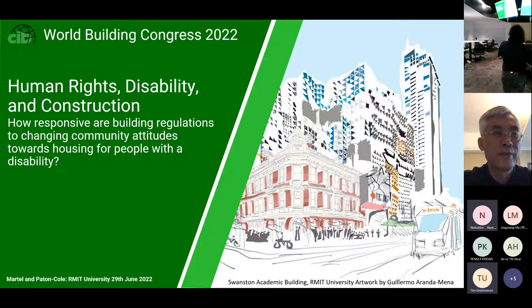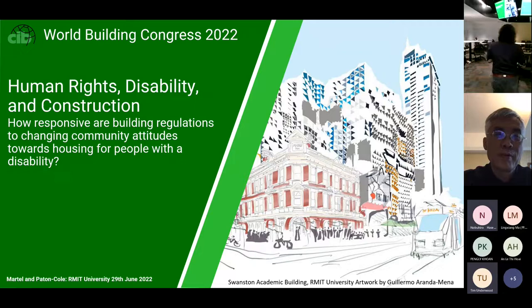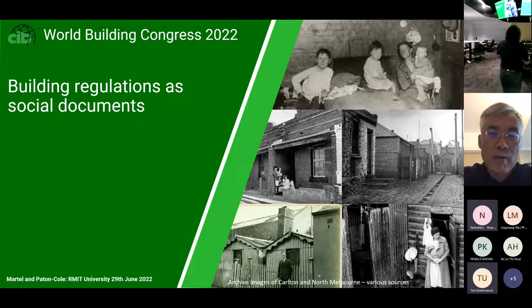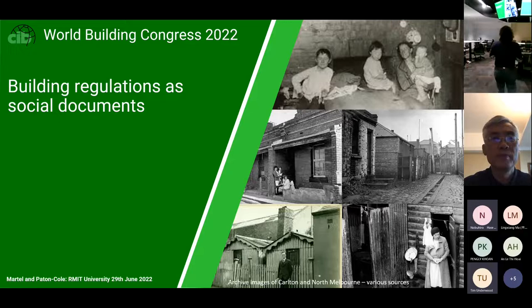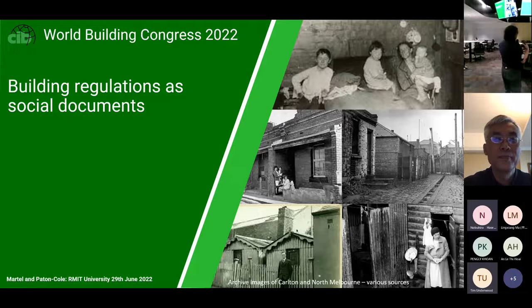The title is: 'Building Regulations to Changing Community Attitudes Towards Housing for People Who Have a Disability.' The first thing we need to acknowledge is that yes, building regulations are technical documents containing a lot of technical information, but at their heart, building regulations are social documents. They reflect social attitudes and community attitudes towards a whole range of things — health, safety, expectations of family life — and so we need to understand that building regulations are really social documents at their heart, as well as technical ones.